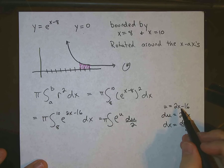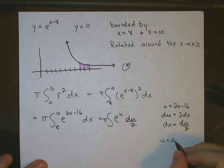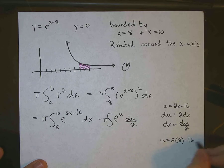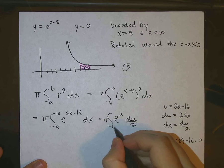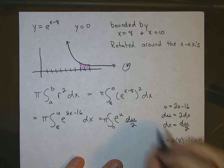So we'll use this formula, u is equal to 2x minus 16. So u is equal to 2 times 8 minus 16, which is 0. That's our lower limit. And u is equal to 2 times 10 minus 16. That's 4. That'll be our upper limit.